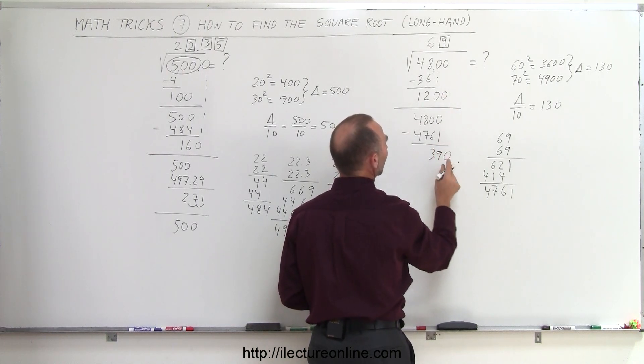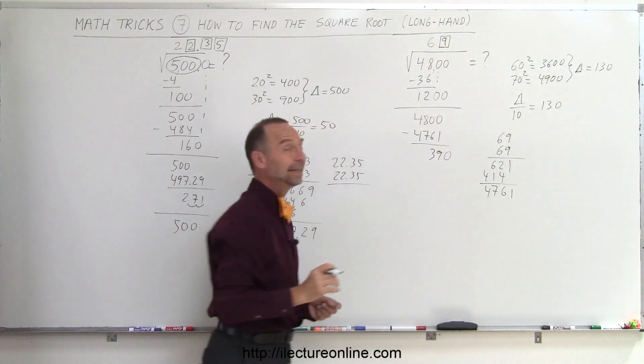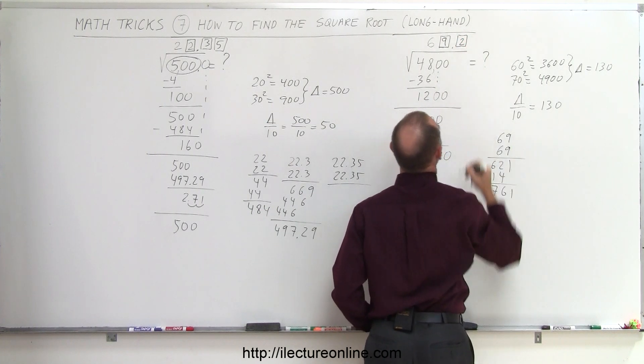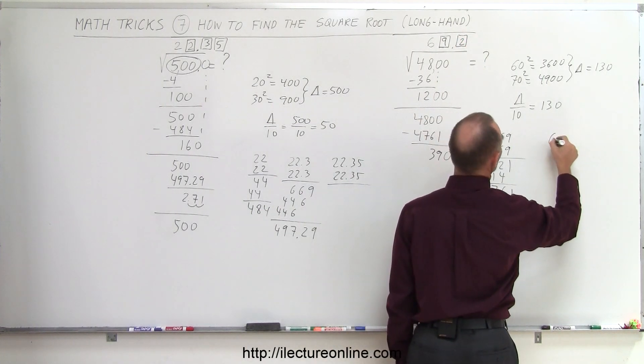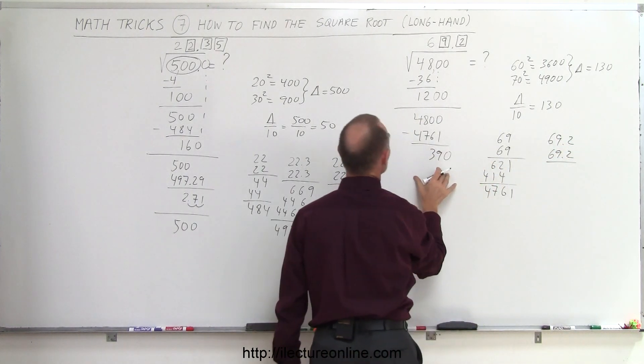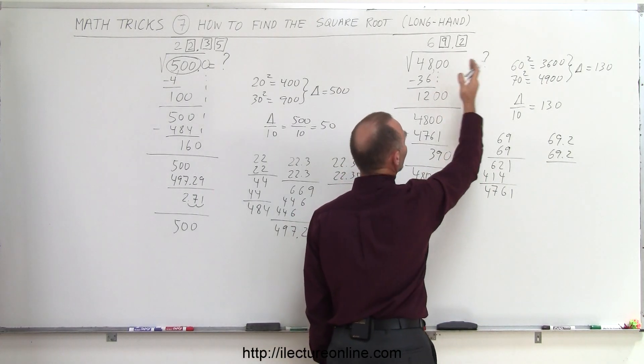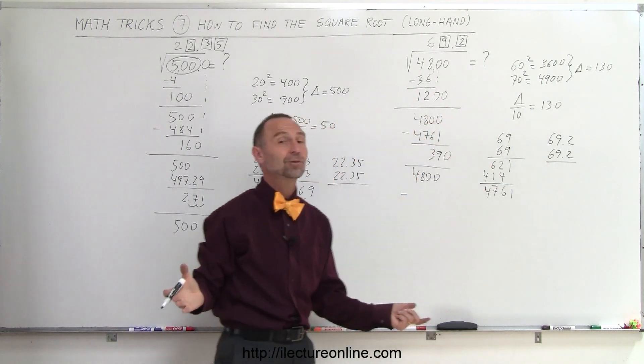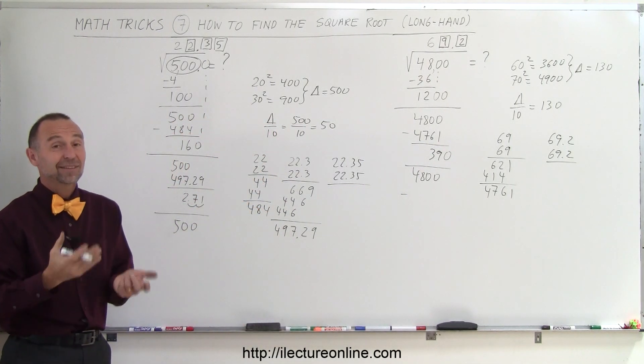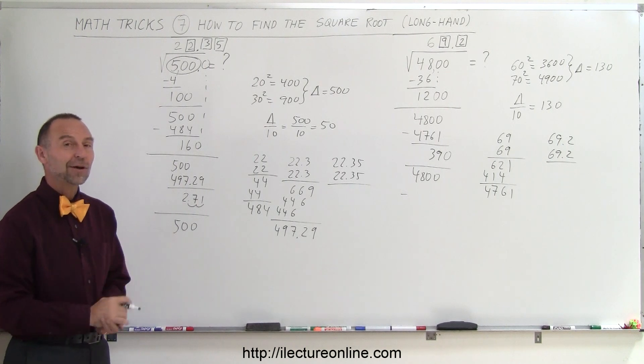I drop down 1, 0, because that number would be big enough, so 130 fits into 390 two times, which means that it's my next number right here: 2. And I can continue the process. I can say 69.2 times 69.2, whatever number I get, I subtract that from 4800 minus my result, and I can just continue. Or I can say 69.2, close enough, that's all I need to do. And so I know that it's probably somewhere between 69.2 and 69.3. And that's how we find the square root longhand.